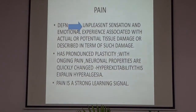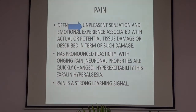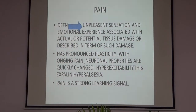How do you define pain? Pain is defined as an unpleasant sensation and an emotional experience which is associated with actual or potential tissue damage, or described in terms of such damage. It has pronounced plasticity — that is, with ongoing pain, neuronal properties are quickly changed, leading to hyper-excitability, which explains hyperalgesia. Hyperalgesia is increased sensation of pain. Pain is also a very strong learning signal.